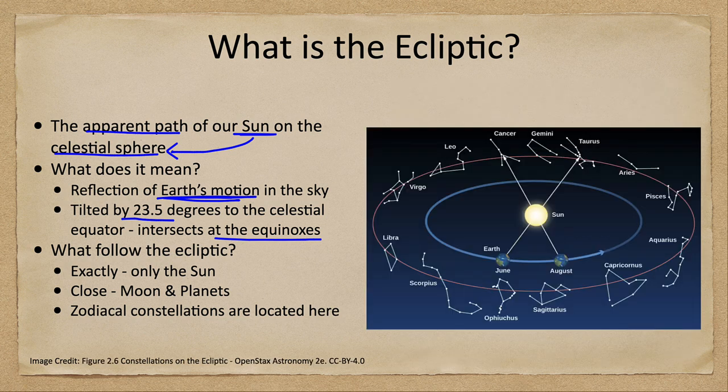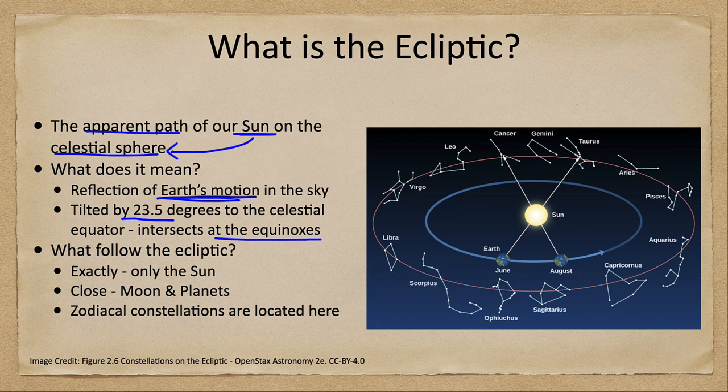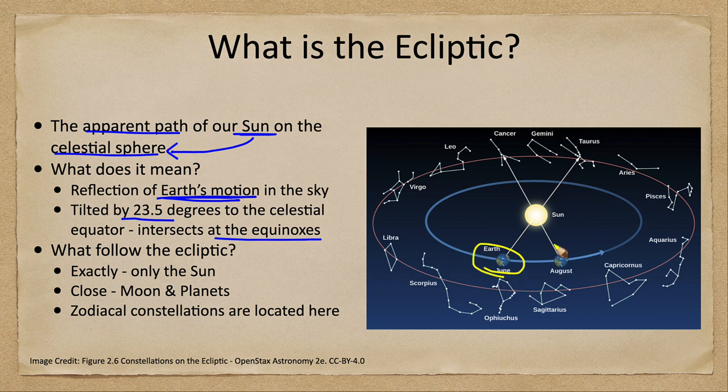Now we can look at that a little bit here. So here we see some images of the Earth and Sun. This is what's actually happening, not what we see in the celestial sphere. We can see that here in June, the Sun is going to appear off in the direction of the constellation of Taurus. A couple months later in August, the Sun now appears in the direction of the constellation of Cancer.